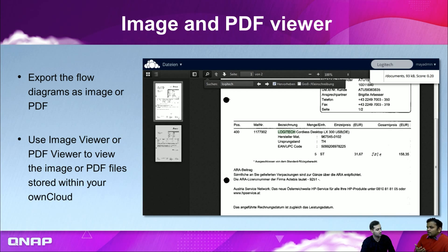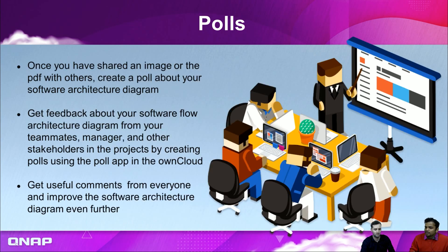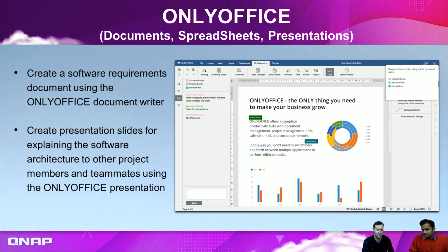If you want other team members to add to the drawing, you can share the draw.io file directly and give other users edit access — multiple users can edit the same diagram at the same time. If you don't want others making changes, you export it as an image or PDF and share that instead. You can then take polls and get feedback from other users on what they think about the software design, get comments, and improve as the project develops.